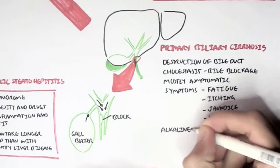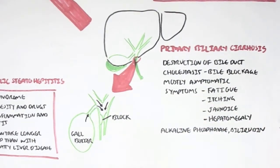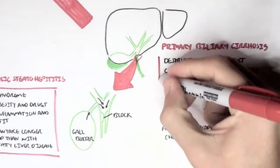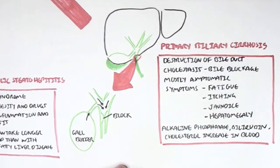Alkaline phosphatase, bilirubin and cholesterol are increased in the blood in this condition. Bilirubin is increased because it's usually eliminated within the bile. However, because the bile flow is blocked, bilirubin will go into the bloodstream and cause jaundice, yellowing of the skin.